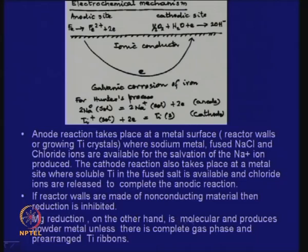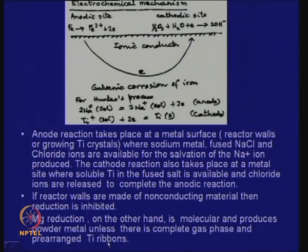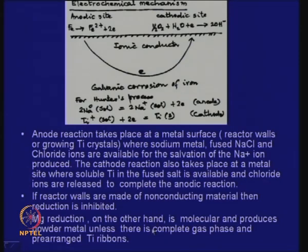Magnesium reduction on the other hand is molecular and produces powder metal unless there are pre-arranged titanium ribbons in the bath. If we go into the complete gas phase with titanium ribbons present, we can have titanium depositing on those ribbons and producing a crystalline product, but in the liquid phase this is not possible.